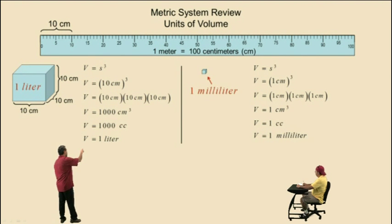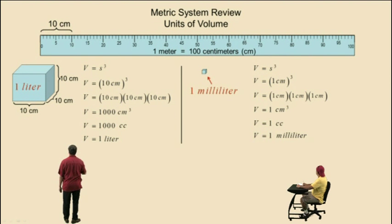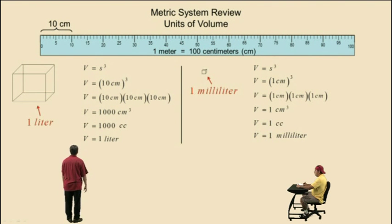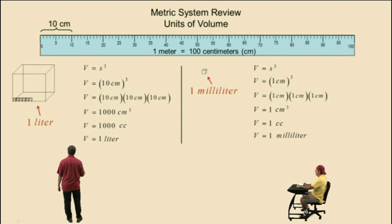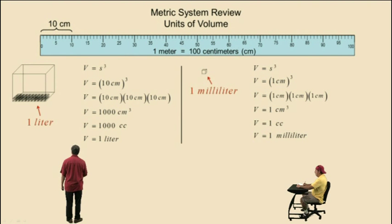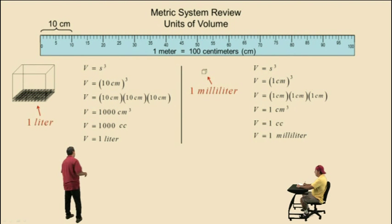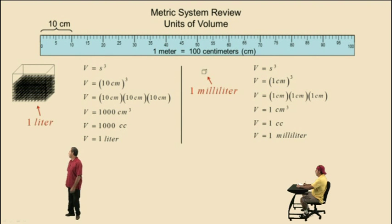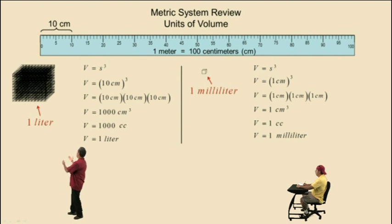That means if you take that 1 cc cube and put it into this larger box, you will need 1,000 of them to fill it. Watch: counting up by ones to 10, then adding layers of 10 up to 100, then adding full layers — 200, 300, 400, 500, 600, 700, 800, 900, 1,000. Therefore, there are 1,000 cc's in 1 liter.